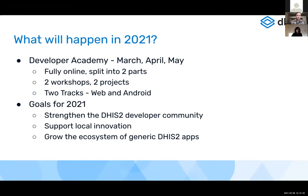So where are we going in 2021? We have another developer academy coming up between March, April, and May of this year. It is going to be again fully online and again split into two parts. We have a little bit more of a formal structure for this academy — it's related to or inspired by the one we piloted last year. Now we're extending it a little bit more and also expanding it to two different tracks.